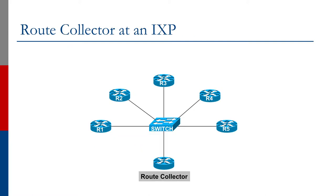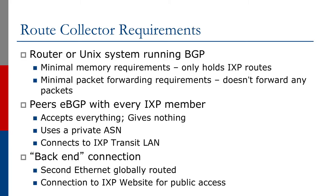The diagram shows how a route collector fits into an exchange point. It connects to the ethernet switch just like all the ISP members would, and all ISP members peer BGP with the route collector. It only needs to be a router — the most common setup — or a Unix system running BGP. It doesn't need a great deal of memory since it only holds the exchange point routes, and it has no packet forwarding requirements.